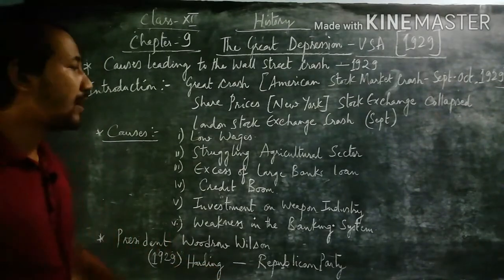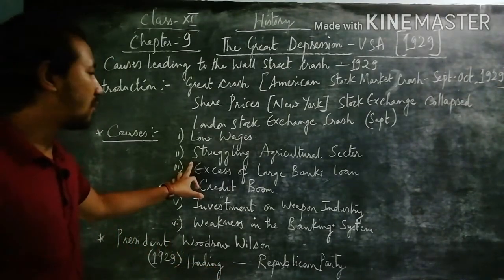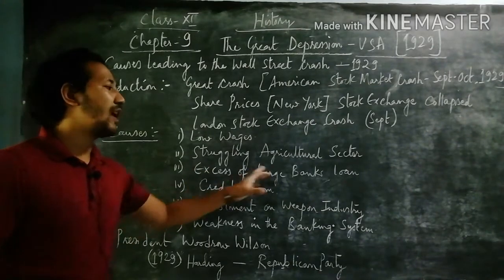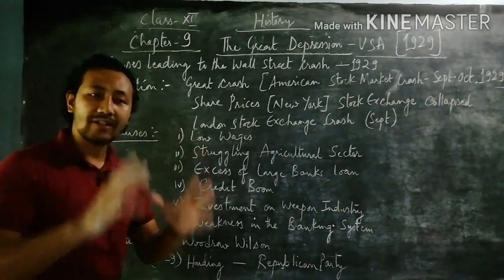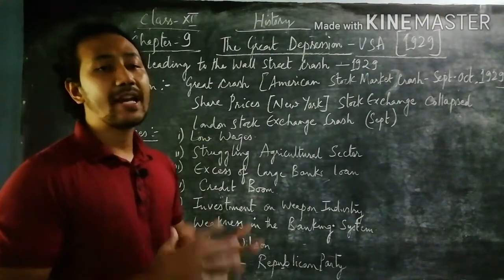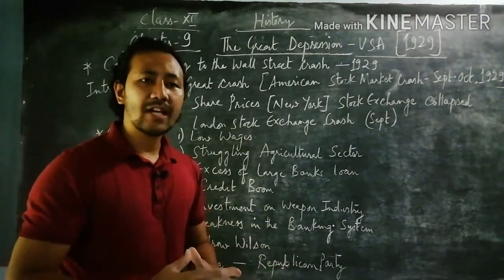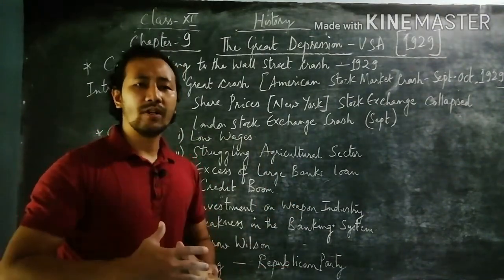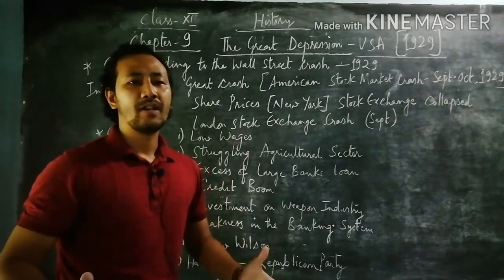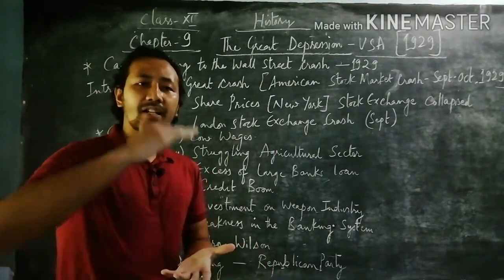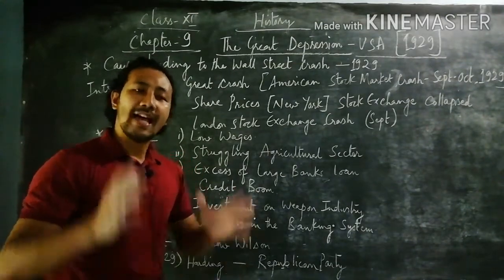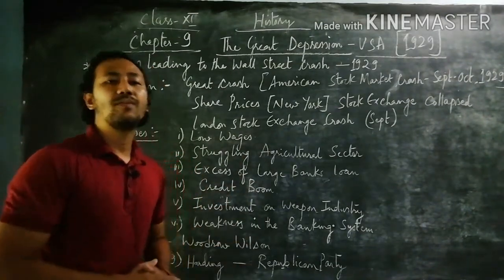Next, we see talking about the excess of large bank loans. When there was a great crash and great depression in America in 1929, America had to take lots of loans — lots of credit from other nations in huge numbers — and that started piling up with lots of interest in the form of compound interest too, which also became one of the major causes for the Great Depression.